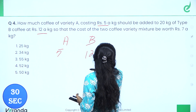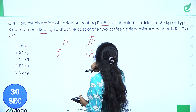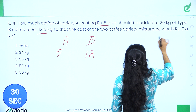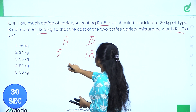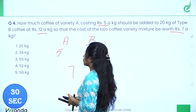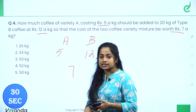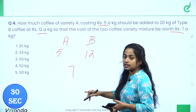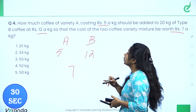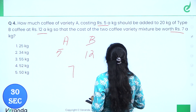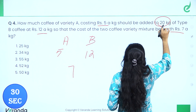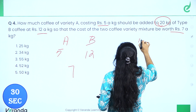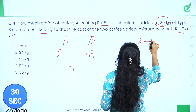The price of the mixture should be 7 rupees per kg. We are given that type B is 20 kg.